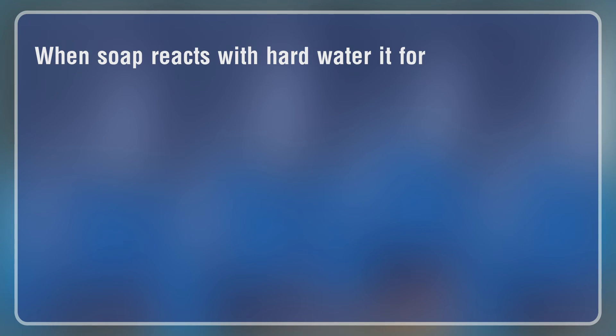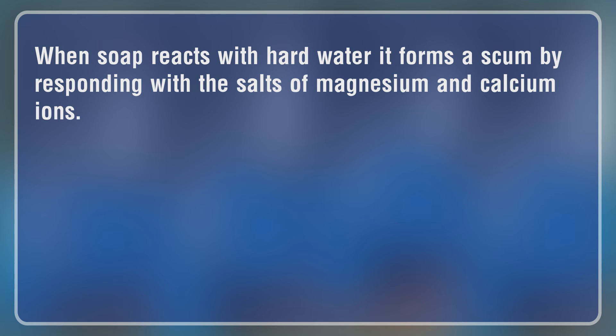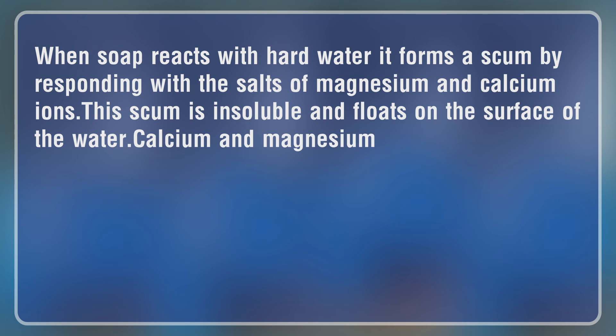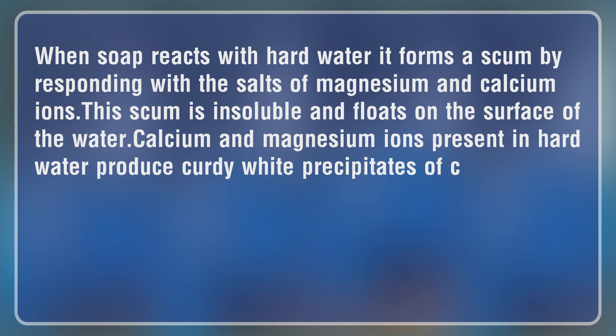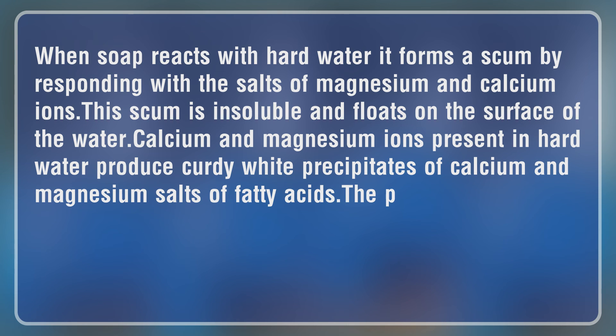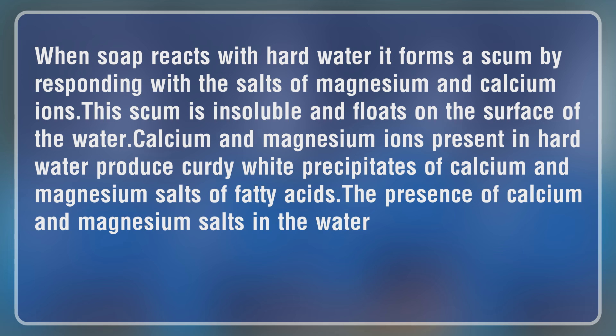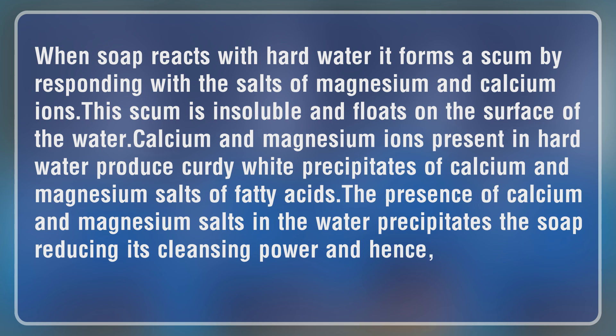When soap reacts with hard water it forms a scum by responding with the salts of magnesium and calcium ions. The scum is insoluble and floats on the surface of the water. Calcium and magnesium ions in hard water produce curdy white precipitates of calcium and magnesium salts of fatty acids. The presence of calcium and magnesium salts in water precipitates the soap, reducing its cleansing power and hence foaming capacity.